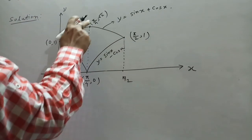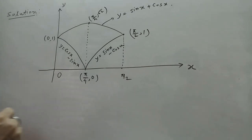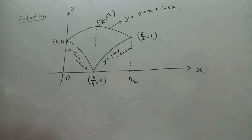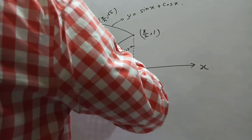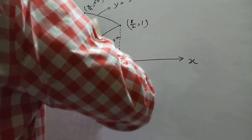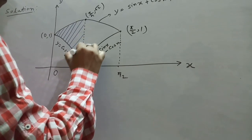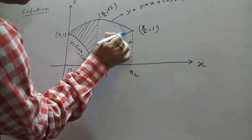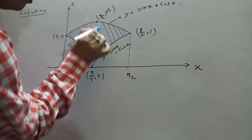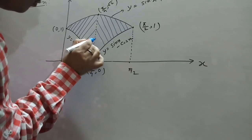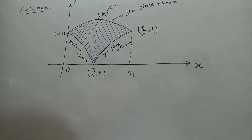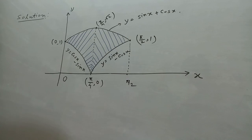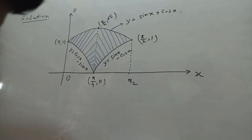This curve y = sin x + cos x passes through (π/4, √2). Therefore, the enclosed area bounded by these three curves — curve 1, curve 2, and curve 3 — is identified. This is the enclosed area bounded by y = sin x + cos x and y = |cos x - sin x|. We will find the required area from this graph.